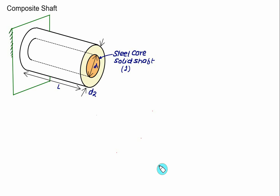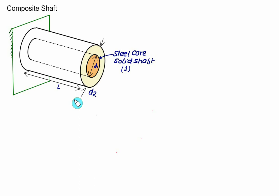Up till now we have done problems where shafts are in series. This time we'll discuss the case where shafts are parallel — one will be a solid shaft and the outer casing will be a hollow shaft, and they are made up of different materials. If we apply an external torque, the objective is to find how the torque is distributed between t1 (the inside shaft) and t2 (the outside shaft).